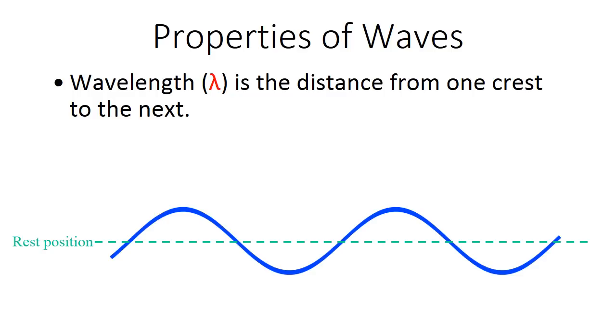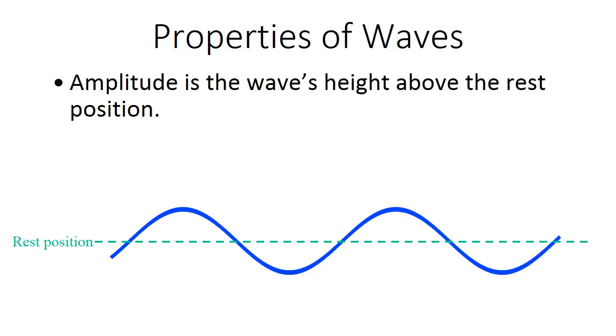So now we'll look at some properties of waves. First off, we'll look at wavelength and this is distance from one crest to the next crest. It could also be from one trough to the next trough or really any one point on a wave to the same point on the next wave would be the wavelength. Amplitude is the wave's height above the rest position. So it's not the height from the bottom of the trough. It's just the height from the middle, the rest position. So if there's no waves, the water would be where that dashed line is.